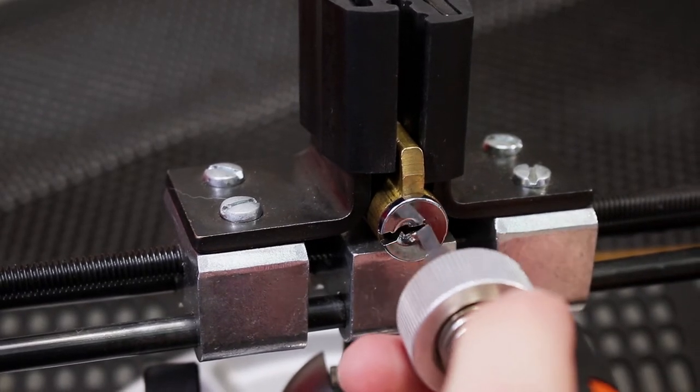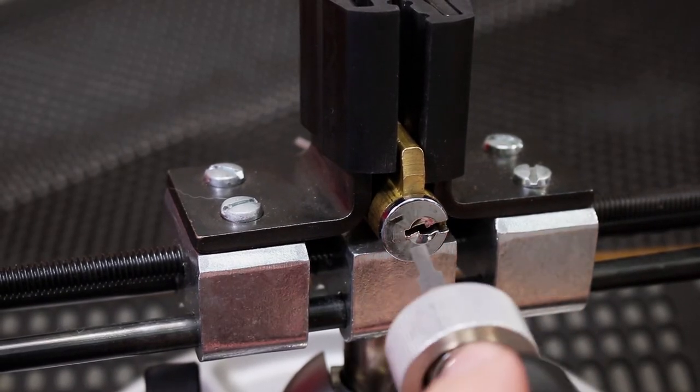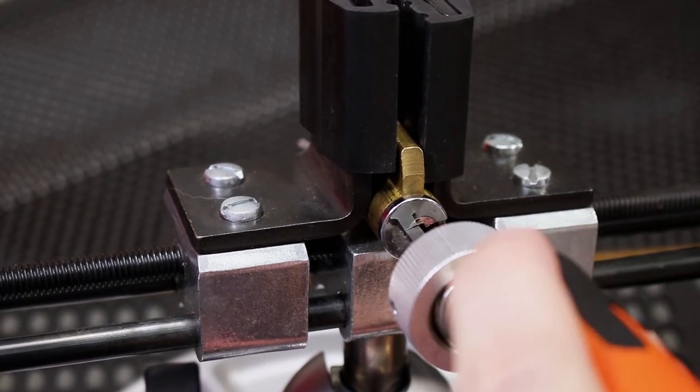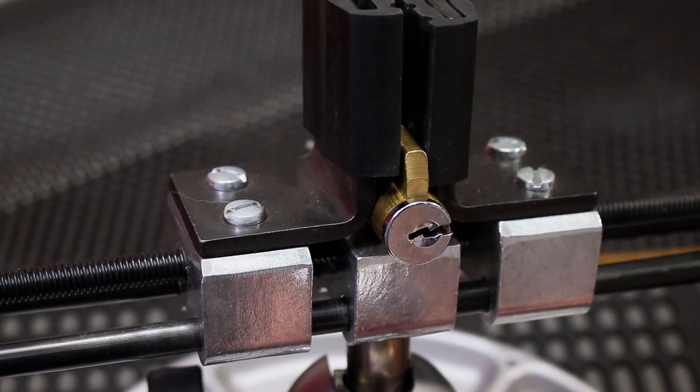Now I'm going to just line this up and I'm going to hit the button and it will flip it over to the other side. Just like that, the lock has now been turned from a clockwise pick to a counterclockwise pick in just a matter of moments.